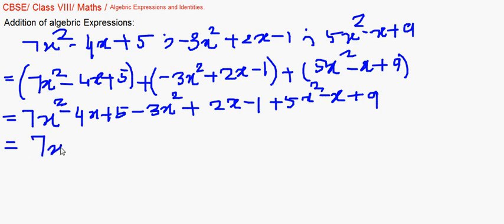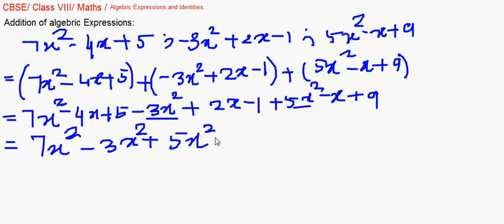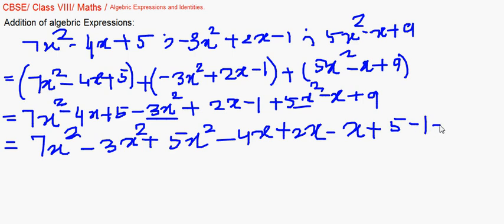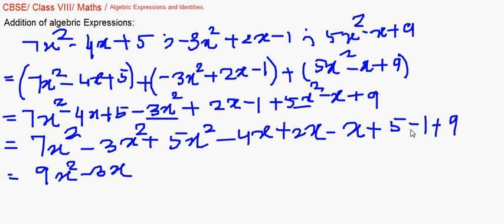So it's 7x² and then minus 3x², and there is one more x² which is plus 5x². Then we collect all the x terms together: minus 4x, plus 2x, and minus x. Then the constants: plus 5 minus 1 plus 9. Now adding: 7 minus 3 gives 4, and 4 plus 5 gives 9, so 9x². Then minus 4 plus 2 is minus 2, minus 2 minus 1 is minus 3, so minus 3x. And 5 minus 1 is 4, and 4 plus 9 is 13. So our answer is 9x² minus 3x plus 13.